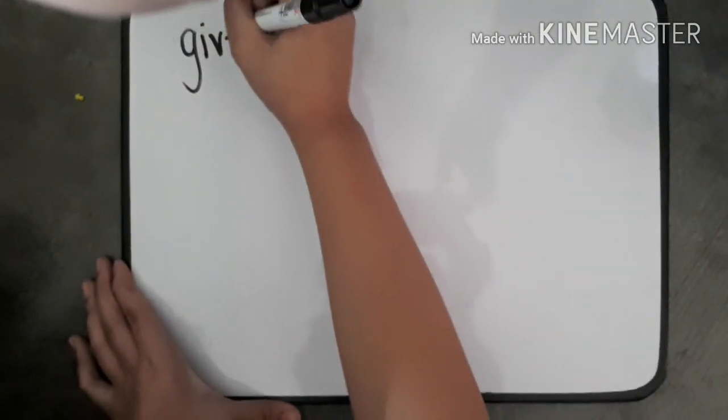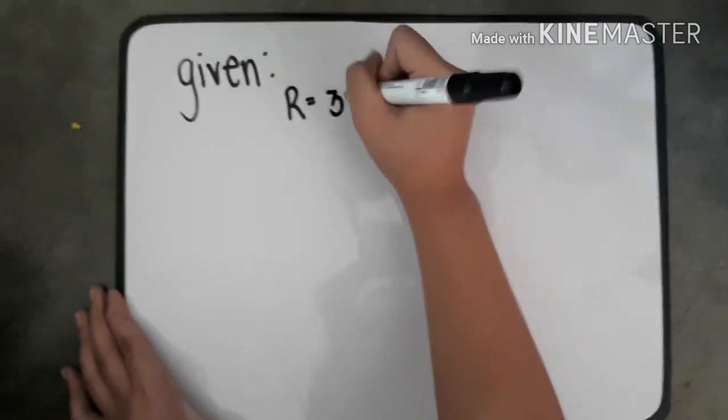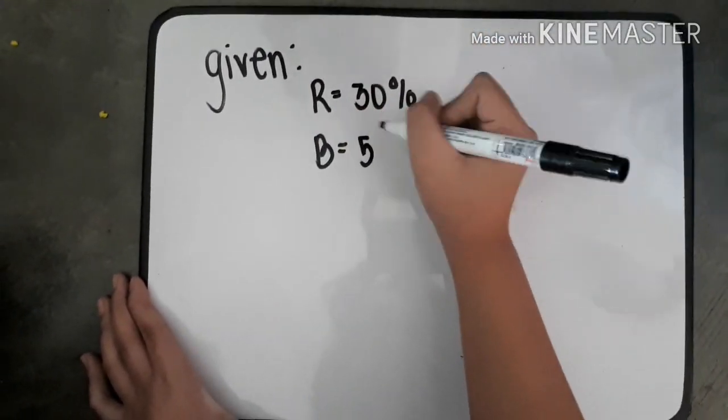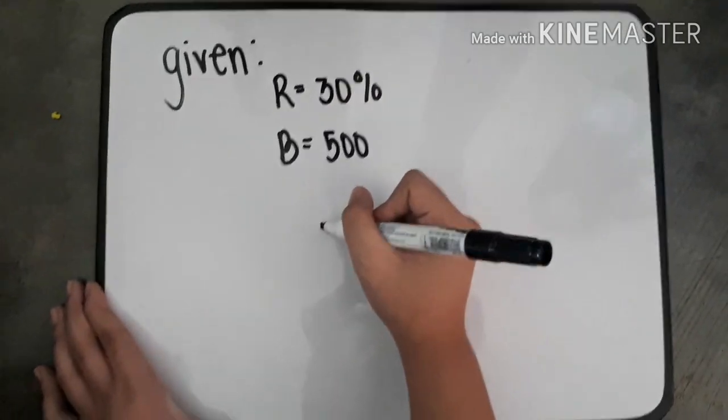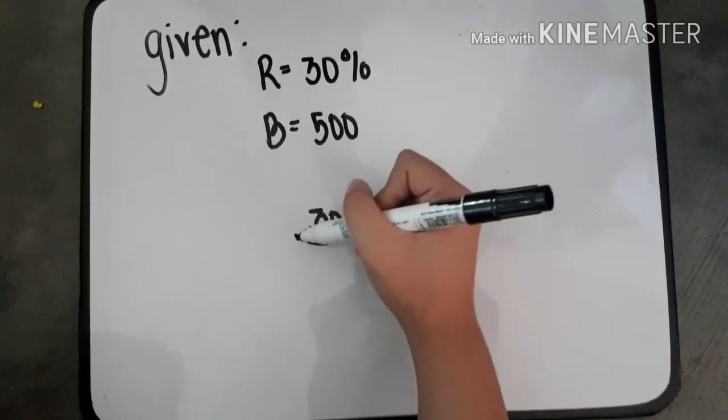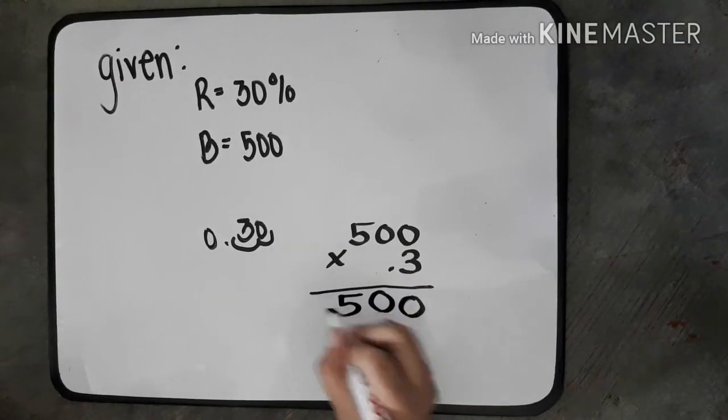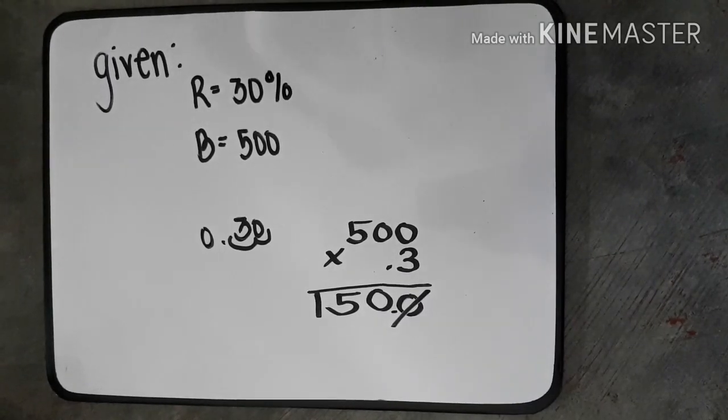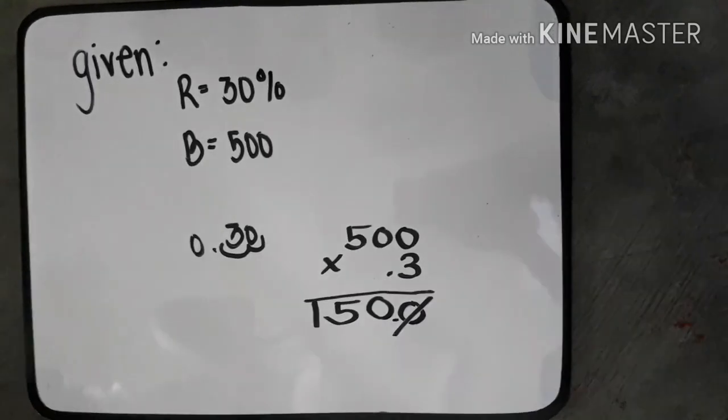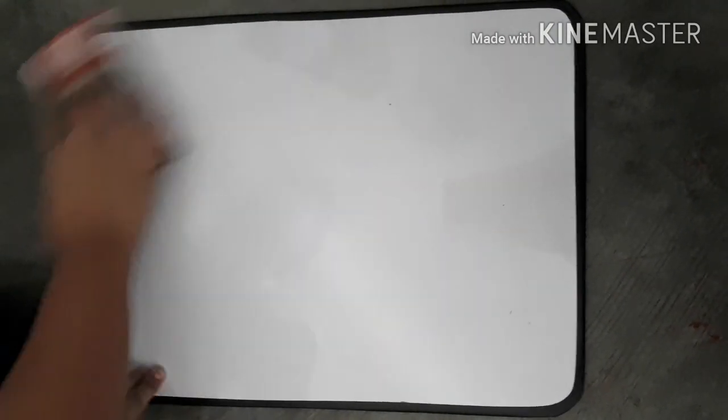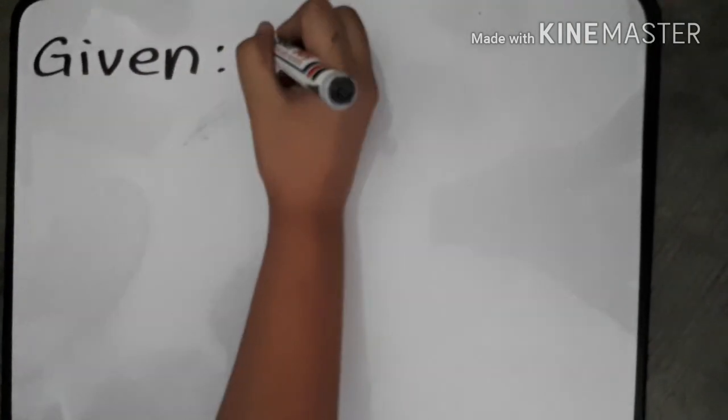Since you know how to identify which is missing, let's start solving, shall we? Let's solve for percentage first. Our given is 30% as our rate and 500 is the base. Before we multiply it, we convert percent to decimal. This will turn 30% into 0.3. Now we will multiply it. The product of 500 multiplied by 0.3 is 150.